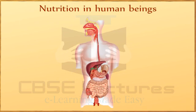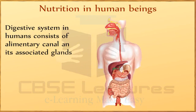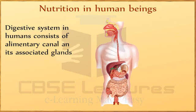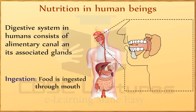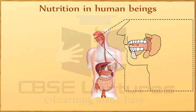Does nutrition in human beings take place likewise as in amoeba? No. Human beings are multicellular organisms. Their digestive system consists of the alimentary canal and its associated glands. The first step in nutrition in human beings is ingestion — food is ingested through the mouth.